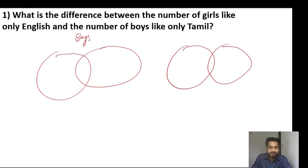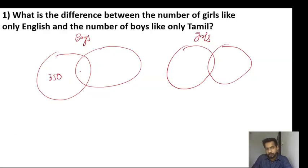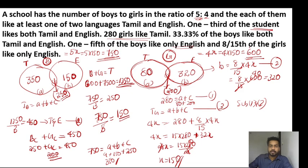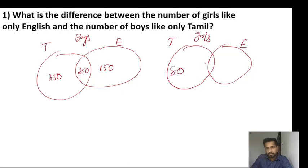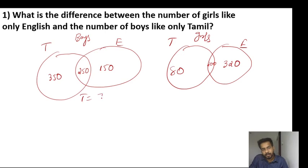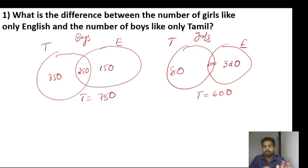So boys and girls: this is 380, 280, 180. Tamil and English. This is Tamil; this is English. Values: 80, 200, 300. Total is 780 or total is 800. What is the difference between the number of girls like only English and the number of boys like only Tamil? Girls like only English.